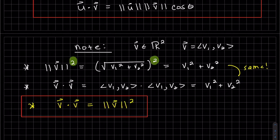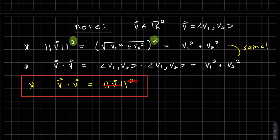But the dot product of itself is equal to the magnitude squared. That's something we're going to use here.